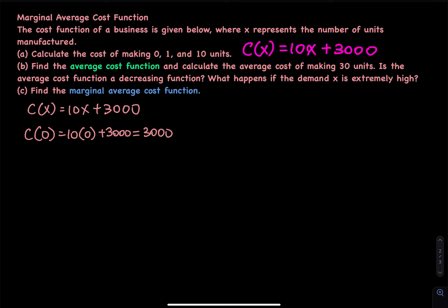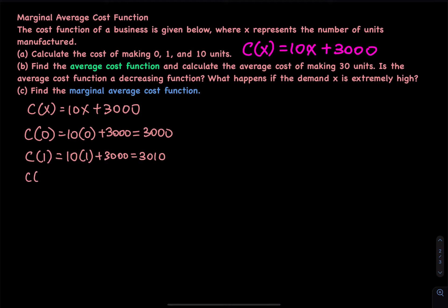How about one unit? If you increase x by 1, then 10 will be added to the 3000. So 10 times 1 plus 3000 equals 3010. For each unit you manufacture, you spend an additional $10 — make 1, spend 10; make 2, spend 20; make 3, spend 30. When x equals 10, we have 10 times 10 plus 3000, which equals $3,100.